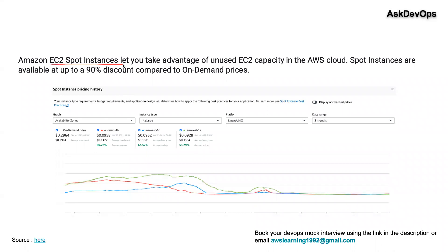Amazon EC2 spot instances let you take advantage of unused EC2 capacity in a region. Spot instances are available at up to 90% discount compared to on-demand instances, meaning they are really cheap. However, there are drawbacks — because they use unused capacity, if someone in a region suddenly needs 500 on-demand machines, your spot instances might be taken away by AWS, and your application can fail.